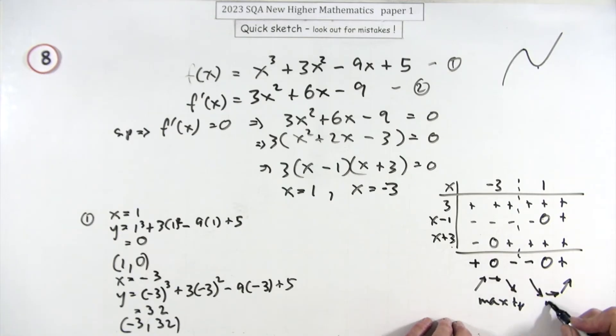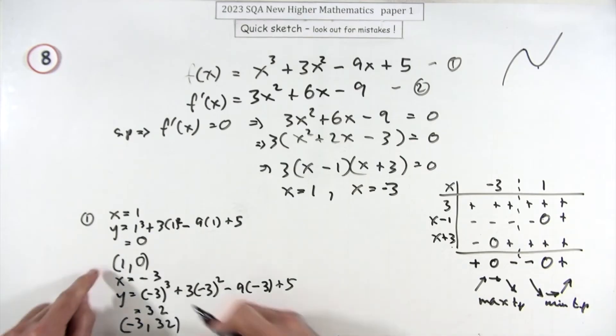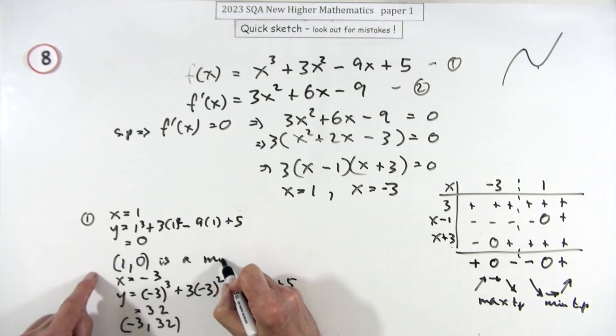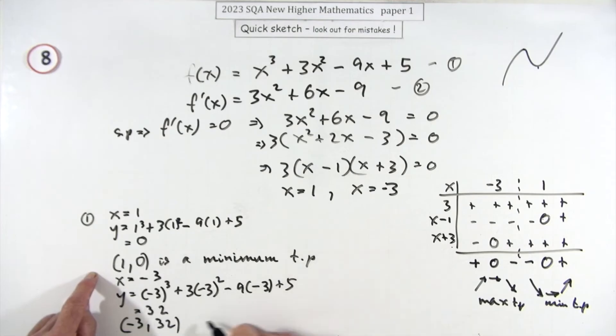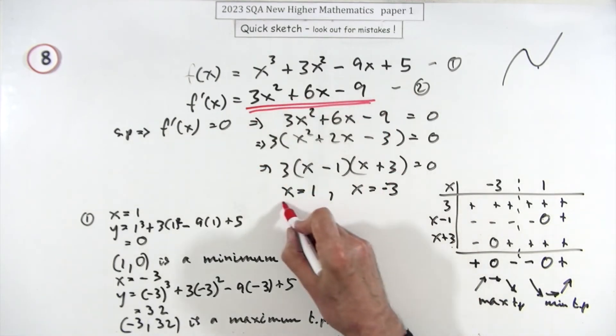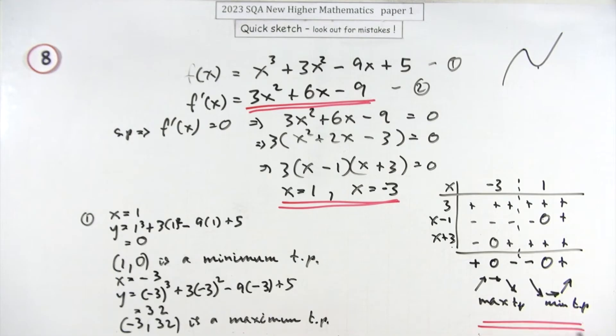So I could just add that over here: (1, 0) is a minimum turning point, and (-3, 32) is a maximum turning point. That's six marks: you differentiated it, found when the derivative was zero, made up your table, got the y coordinates, so you've got the two coordinates and their natures.